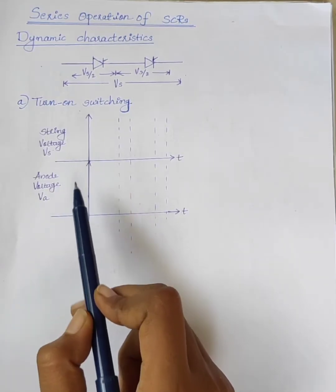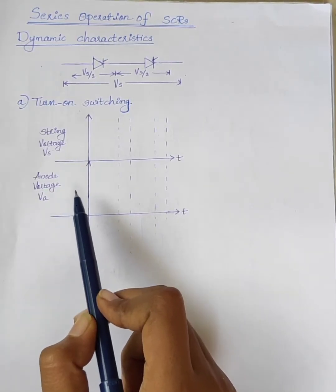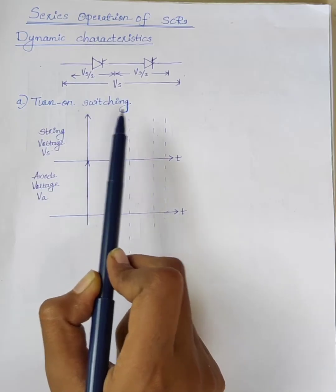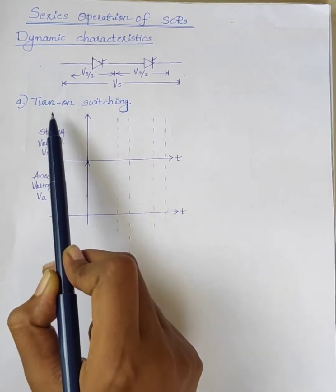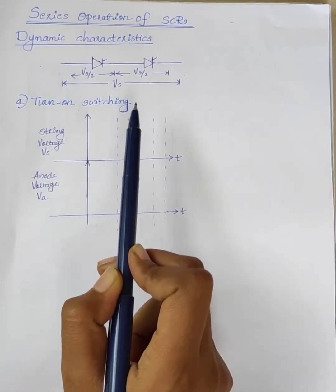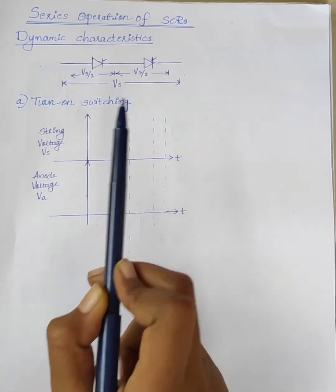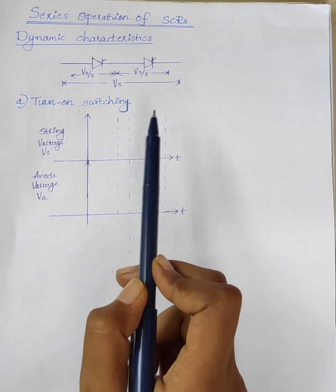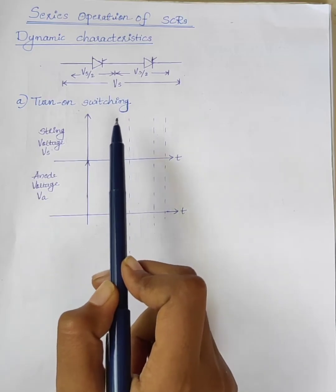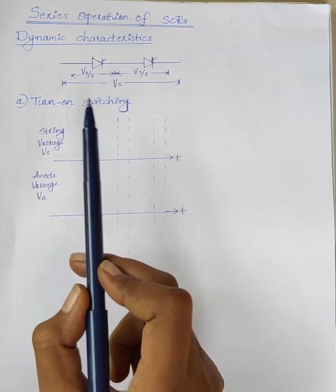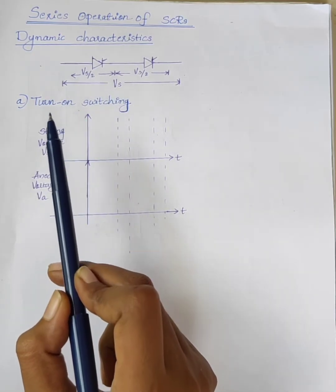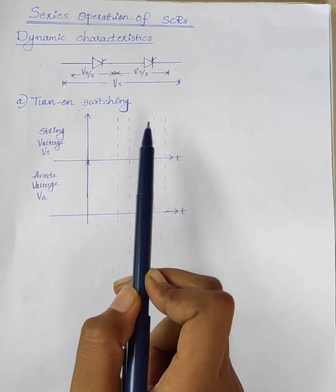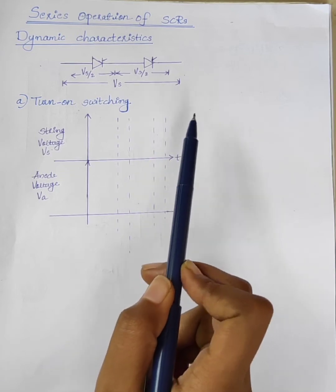First we will discuss turn-on switching. Turn-on switching means the switch changes from its off state to on state — that is, from forward blocking state to forward conduction state.